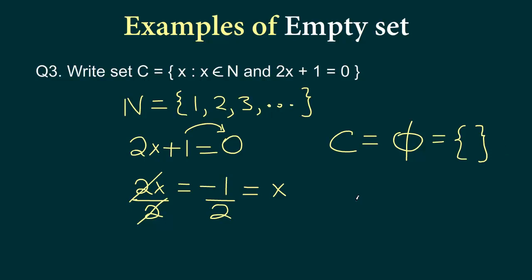Or another way or another conclusion we can draw is that number of elements in set C is 0. So n within brackets, the set represents the number of elements in a set. So for all of the empty sets, the number of elements in the set will be 0.